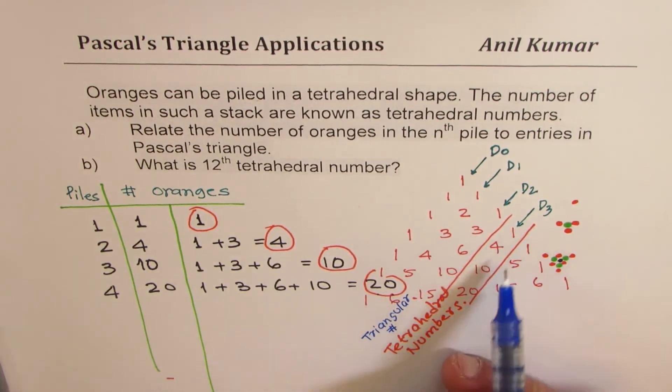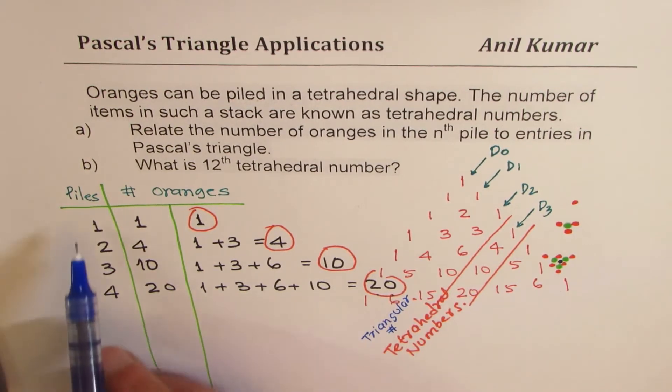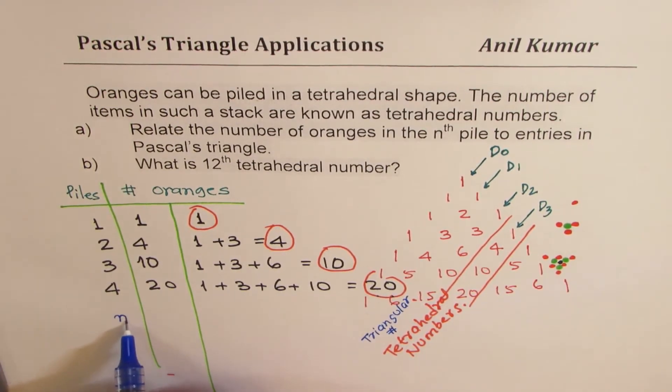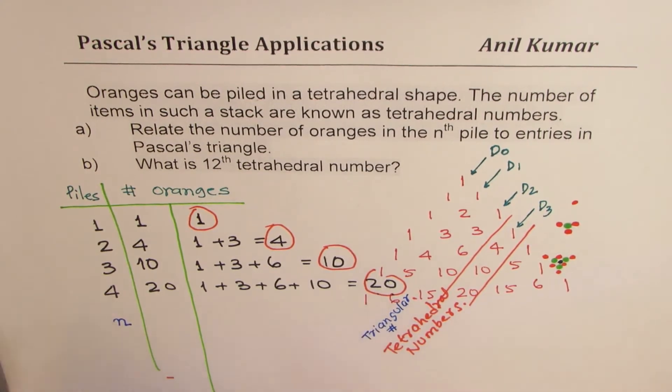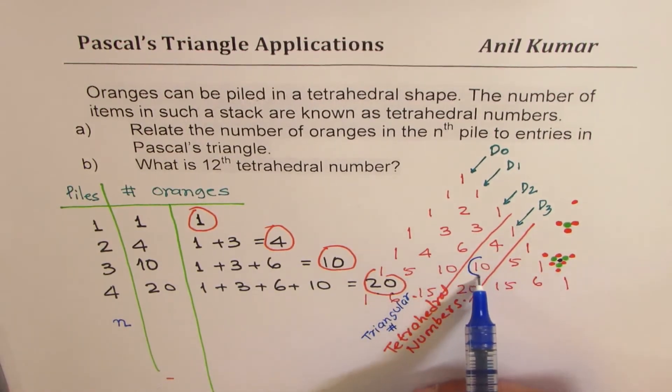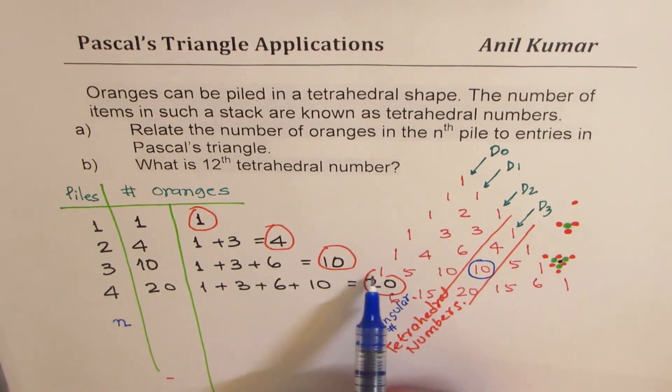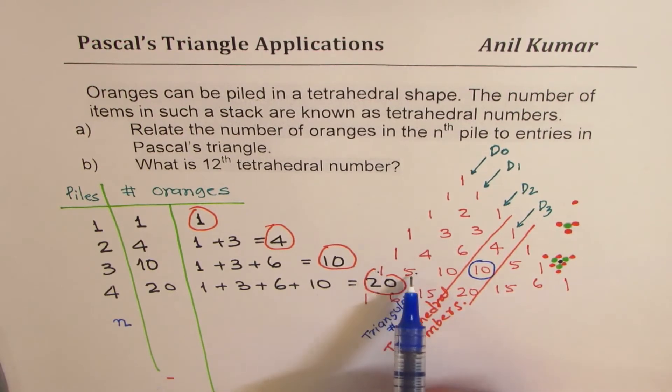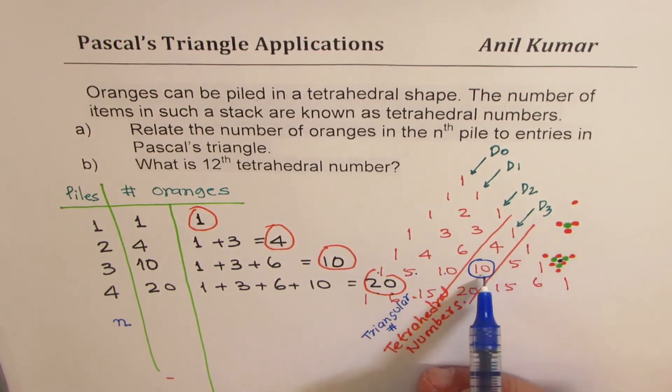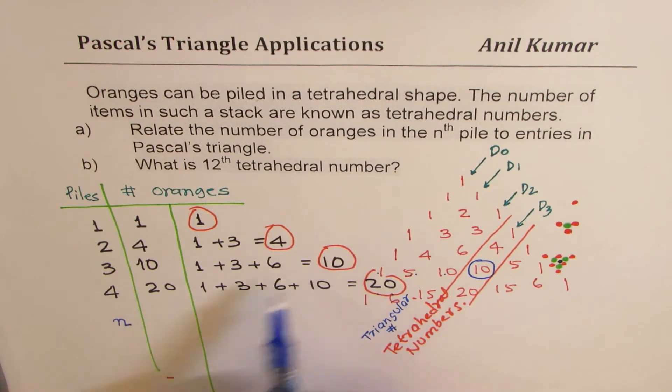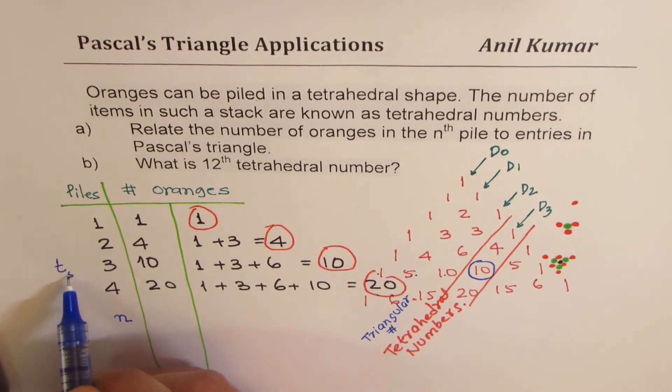Now, one way is we can straight away write down how many oranges from this diagonal itself. So if we are talking about four piles, that is to say, if n is four, then the total is twenty. If n is three, total is ten. So this is ten. Let's relate ten. When we say ten, the number comes from this one is fifth row. Zero, one, two, three. Diagonal is three. Fifth row. So for four, I mean for three, we get fifth row. So this term number is T5,3.